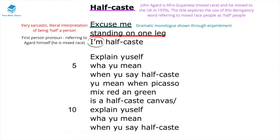The speaker says 'I'm half-caste,' and the first person pronoun 'I'm' refers to Agard himself, who is mixed race — though you can interpret it more widely as the narrator stating that he is mixed race. The title itself is repeated — half-caste — and this repetition forces us to ponder the meaning of this very racist racial slur.